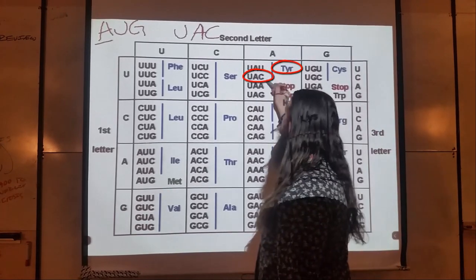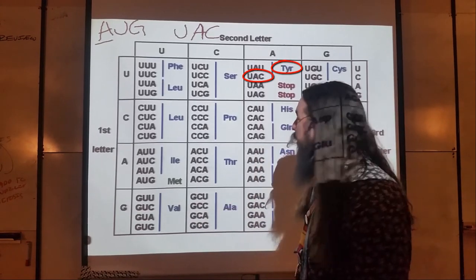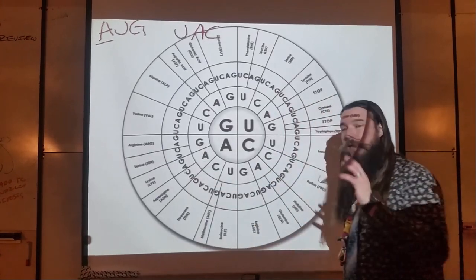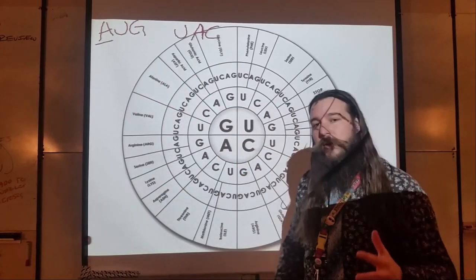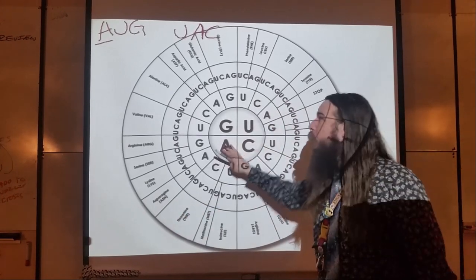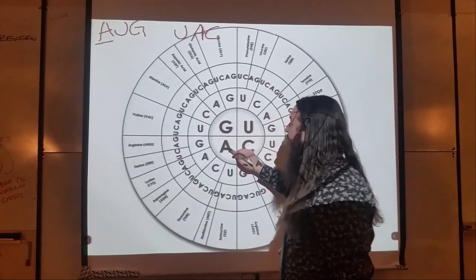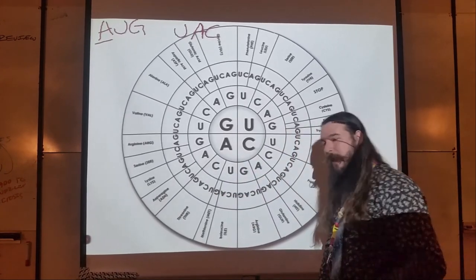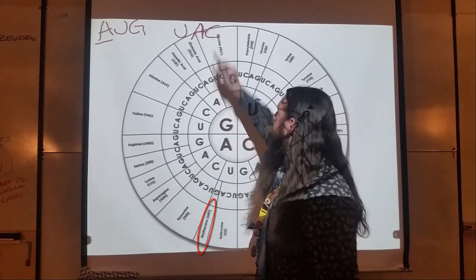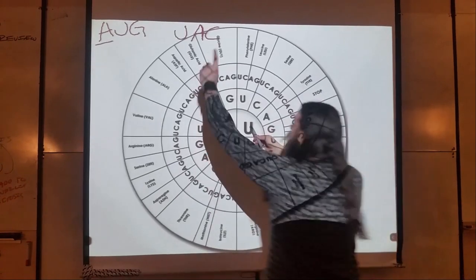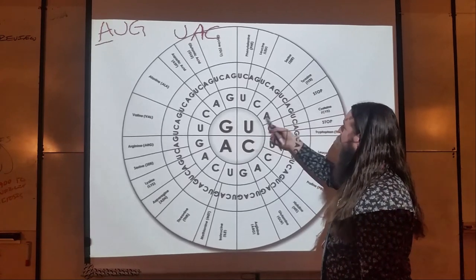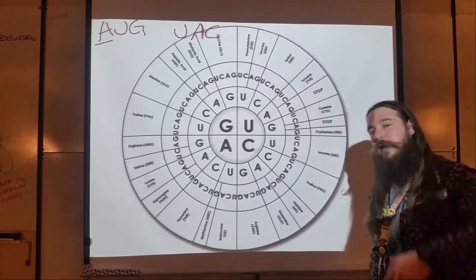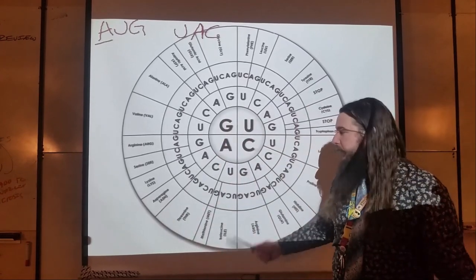You'll notice UAC and UAU both code for tyrosine — this is called the wobble effect. There are also some stop codons — more on that in your next activity. Now using the circle for the same codons: AUG — start in the middle, first letter A, second letter U, third letter G — methionine again. For UAC — first letter U, out to A, then C — tyrosine. The two being grouped together on the circle again shows us the wobble effect.